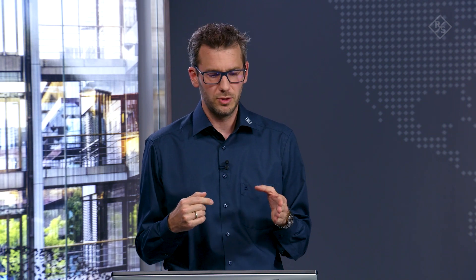For the first way, using the resonance frequency, we require a frequency resolution — this is the QAR50 K10 option. The corresponding formulas are shown on the slide. The second way uses the phase shift, which is the QAR50 K20 option, and its formulas are also depicted on that slide.